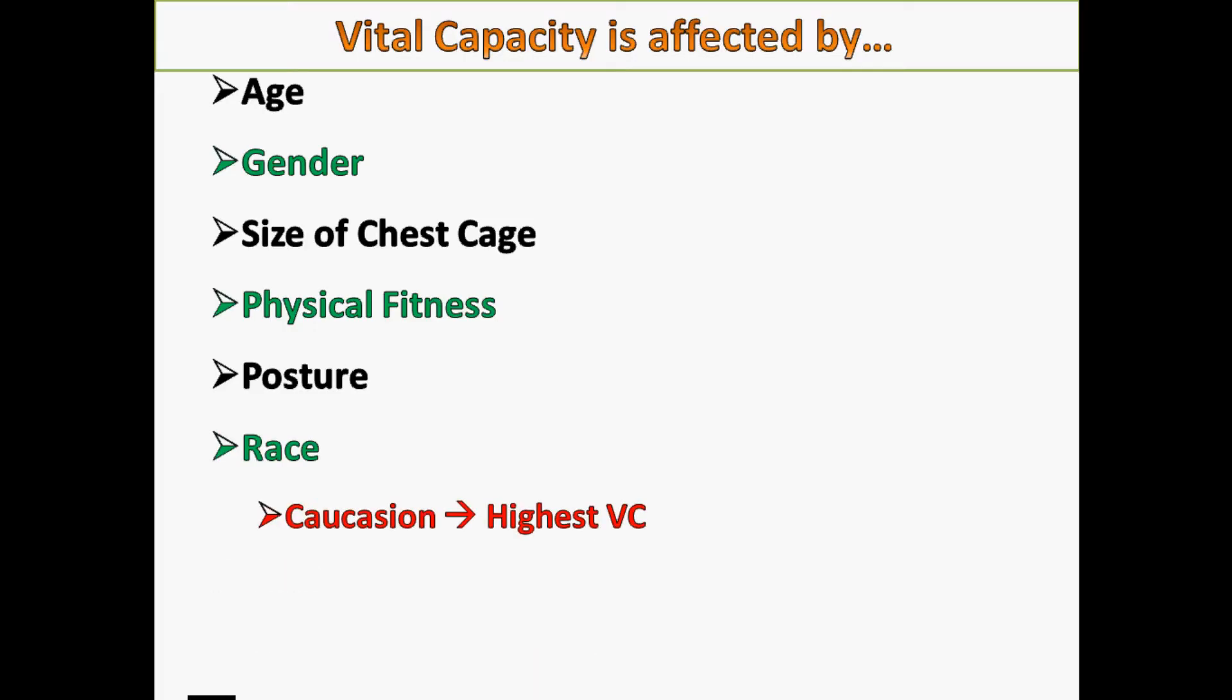For example, Caucasian people are known to have the highest vital capacities, followed by African-Americans, then Indians, then Chinese, and Polynesians have the lowest vital capacity. Any lung abnormalities, such as lung cancer, pneumonia, maybe pregnancy, actually will decrease your vital capacity.